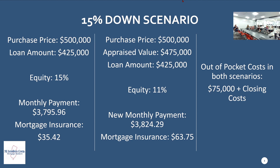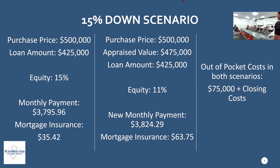If the home under-appraises, we're not scrambling to explain anything. We're already prepared — the buyer knows their payment goes up by about $100 and they're still coming out of pocket for the same dollars. We'll always appeal the appraisal to try to get more value, but when everybody's on the same page before the offer, a big deal doesn't seem like a big deal at all. There's no panic when the appraisal comes in under.